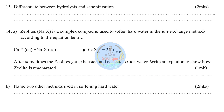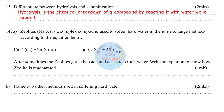Question thirteen: differentiate between hydrolysis and saponification. Hydrolysis is the chemical breakdown of a compound into simpler constituents by reacting it with water. Saponification is the hydrolysis of fats or oils by an alkali, and it involves boiling.